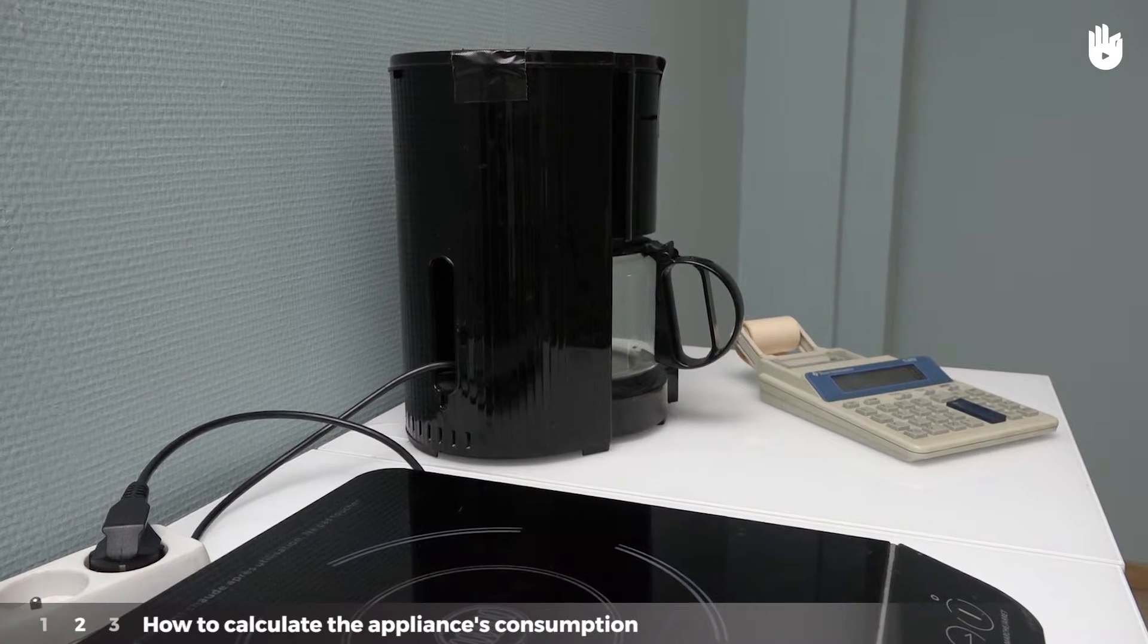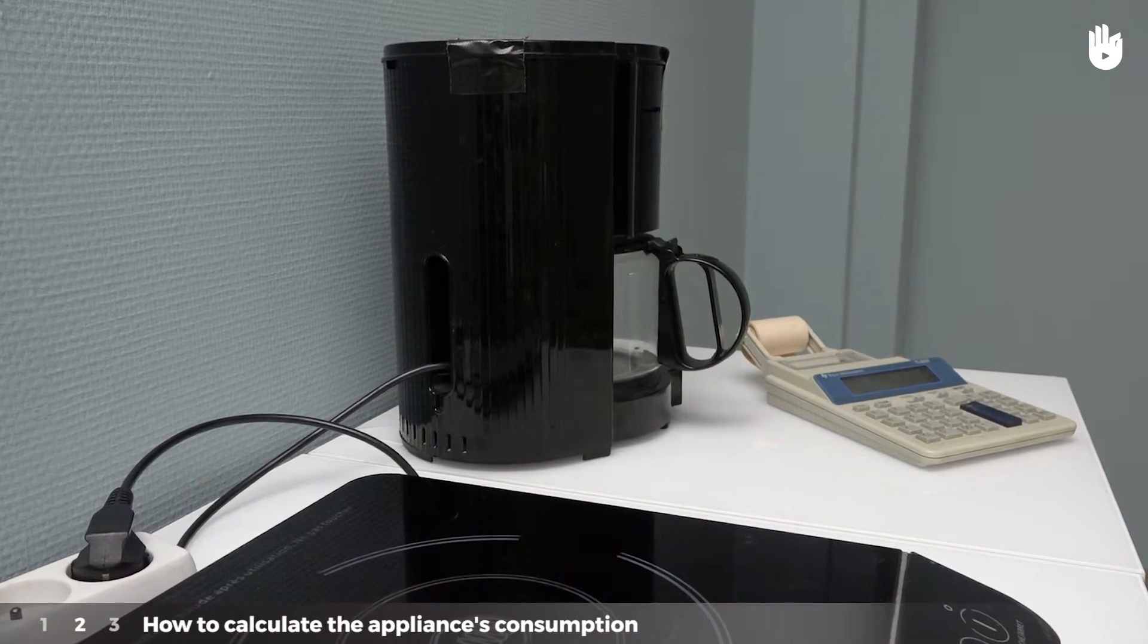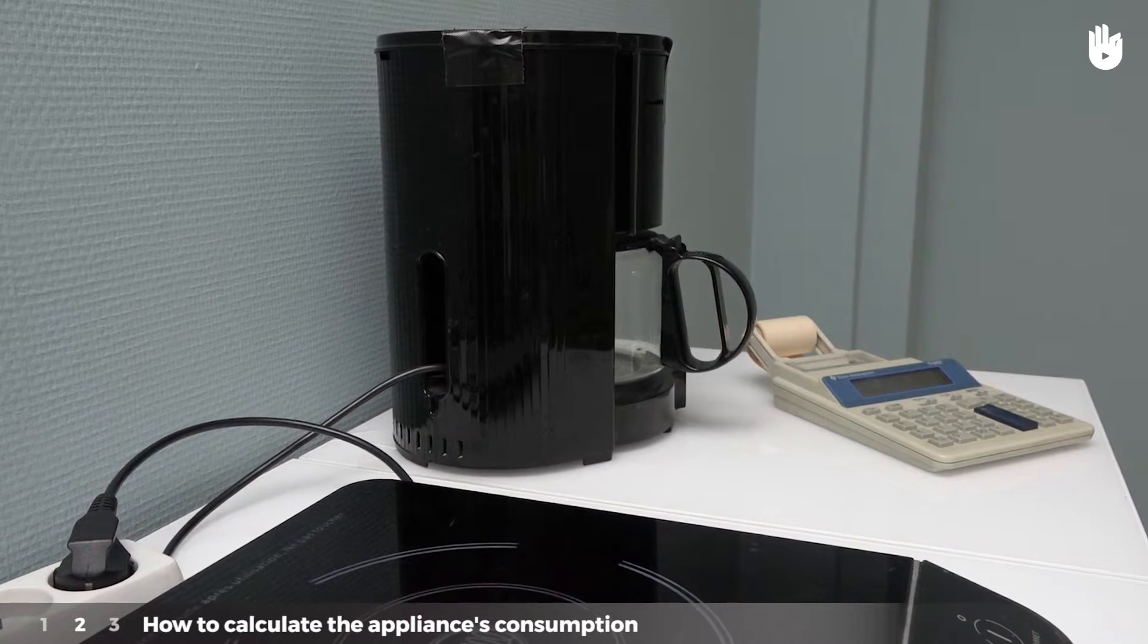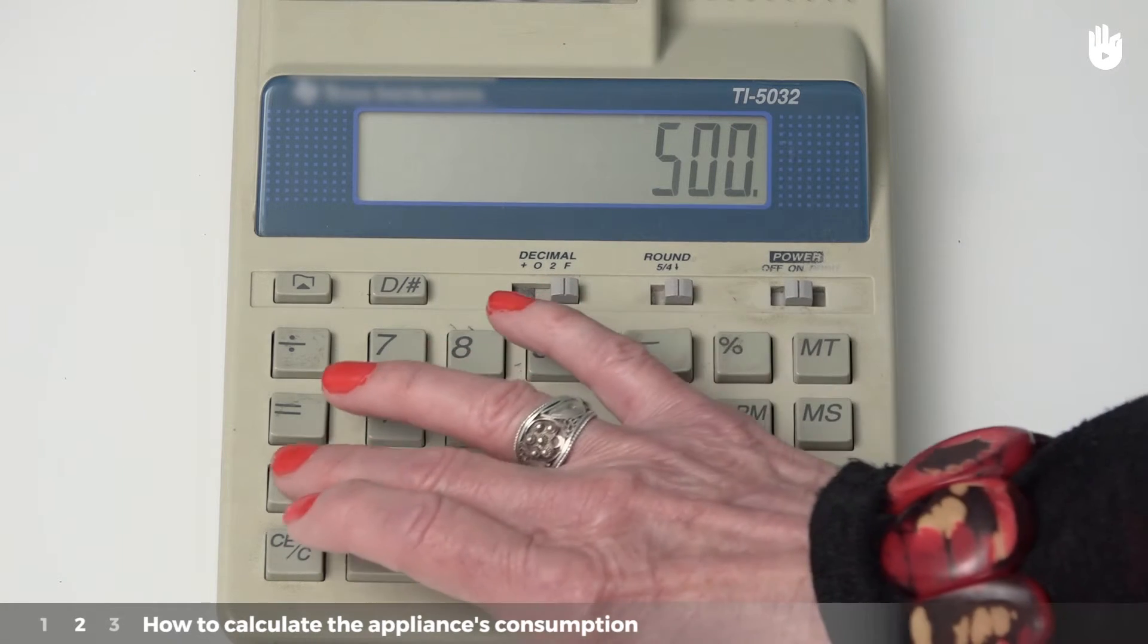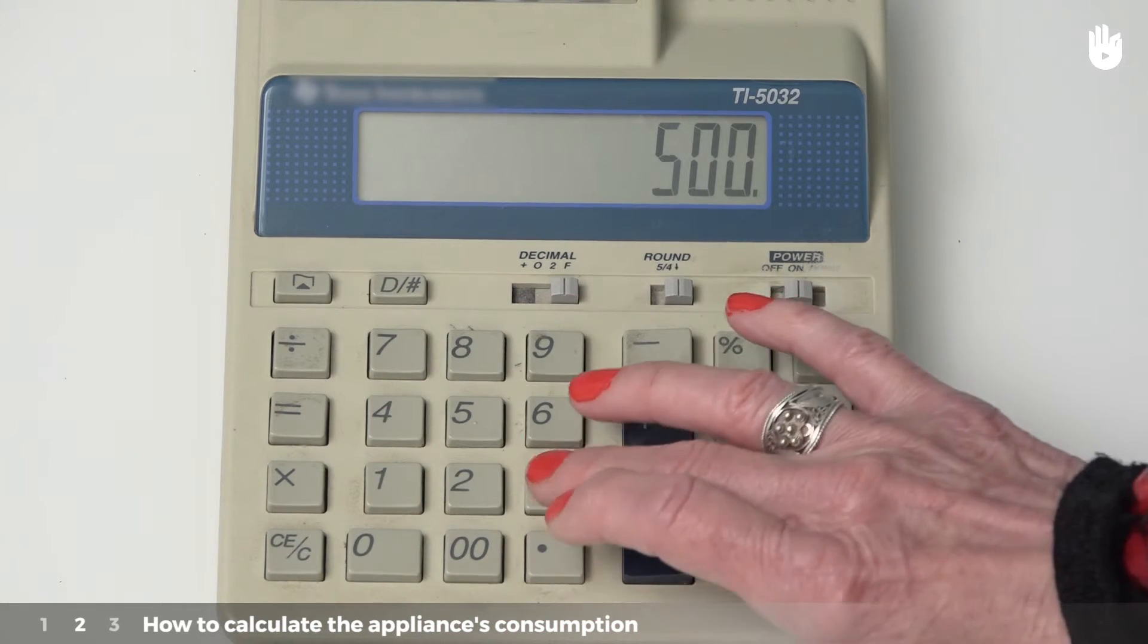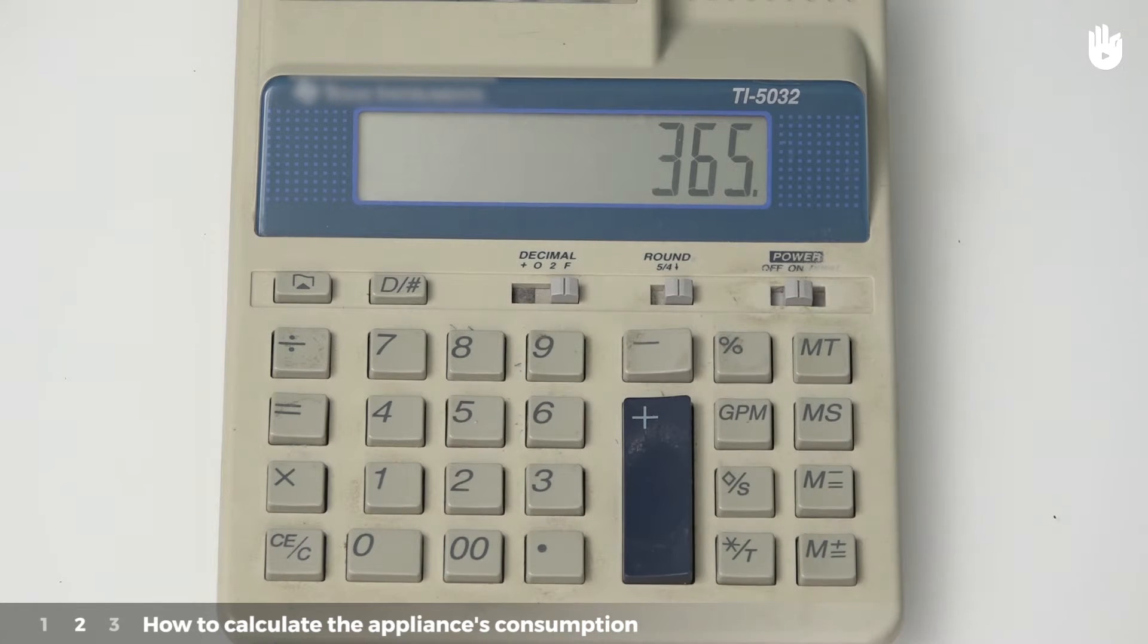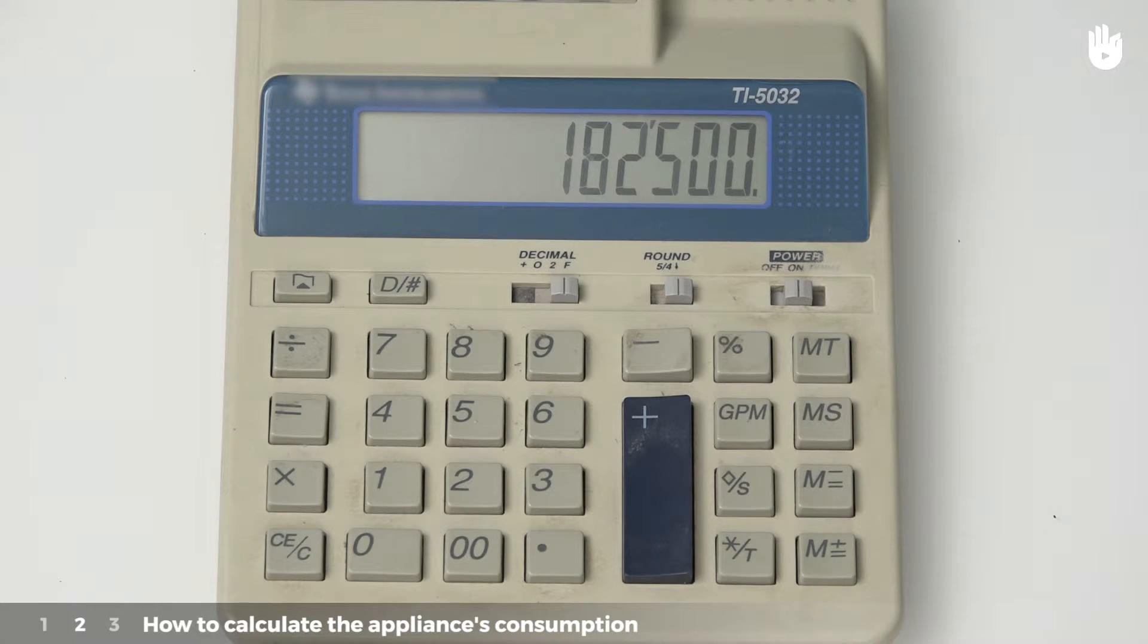For example, for this coffee maker with a wattage of 500 watts used one hour per day, the energy exchanged will be 500 watt hours per day. Multiply by 365 to obtain the result for the year. 500 times 365 equals 182,500 watt hours or 182.5 kilowatt hours.